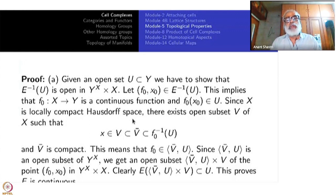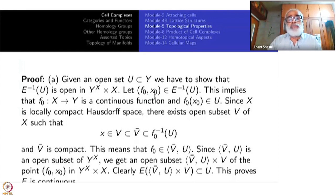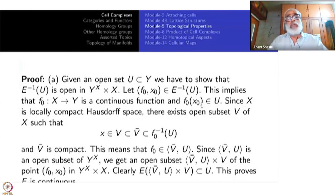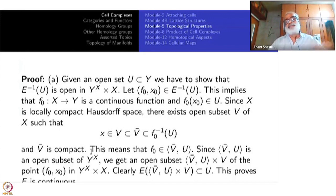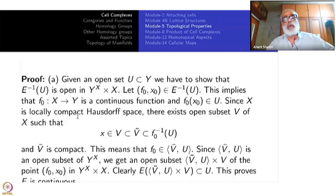Take a point (F₀, x₀) in E inverse of U. Then F₀ is a continuous function from X to Y, and F₀(x₀) = E(F₀, x₀) is inside U. Since U is open and F₀ is continuous, this means some neighborhood of x₀ is taken inside U by F₀. Since X is locally compact Hausdorff, we can actually take an open subset V such that x₀ is inside V, V is contained in V-bar, V-bar is contained in F₀ inverse of U, and V-bar is compact.